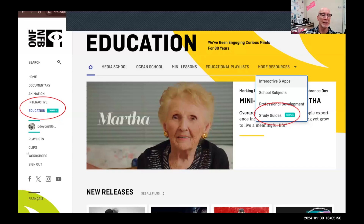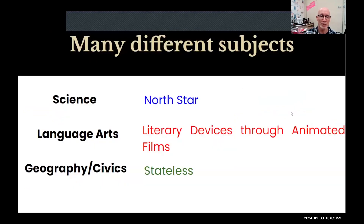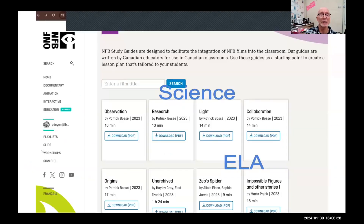Study guides are more film-based, much more detailed and deeper, often involving multiple films. They're edited and curated — they include the whole film plus clips already done, just like Natalie showed. They're more of a unit plan than a lesson plan, potentially spanning a week, two weeks, or more. To find them, go to 'Interactive Education' and click on 'Study Guides.' There's one about stateless Haitian people — a really moving story that generates great ethics discussion.